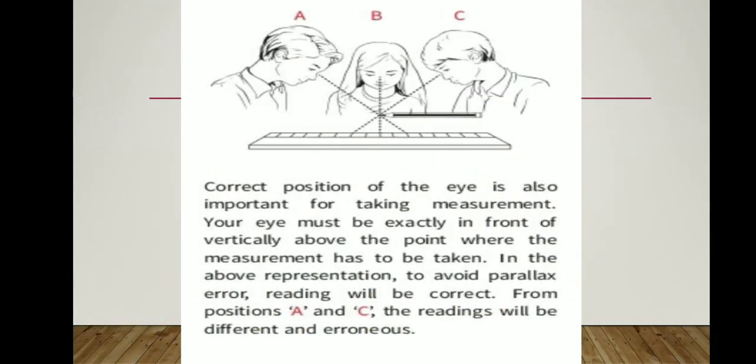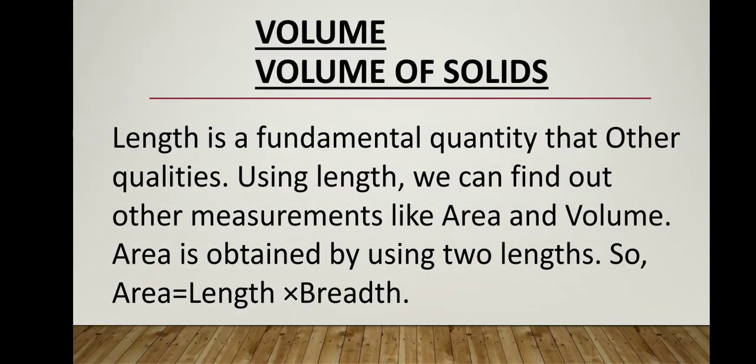The correct position of the eye is also important for taking measurements. Your eye must be exactly in front of — or vertically above — the point where the measurement is to be taken. To avoid parallax error, reading will be correct from position A. Readings from positions B and C will be different and erroneous.